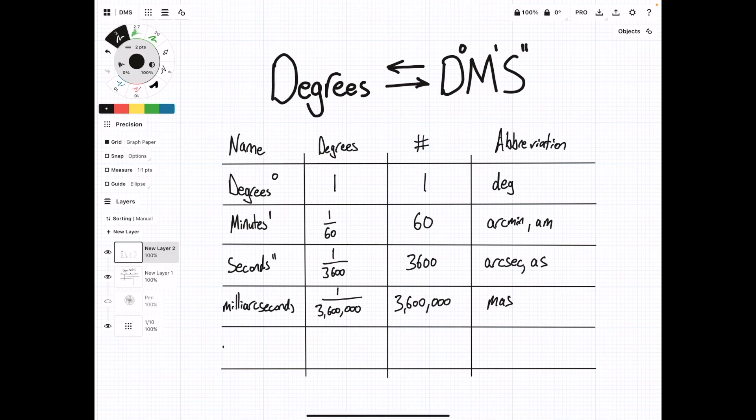And at the very, very bottom, we have micro-arc seconds. And there are a lot of them in a degree. Again, these ones you won't run into as frequently, but depending on what field of study you're in, you may actually use them a bunch. And the abbreviation is the micro symbol AS.